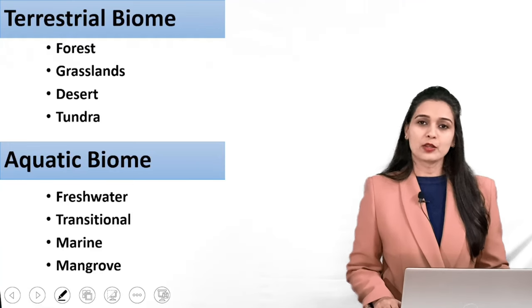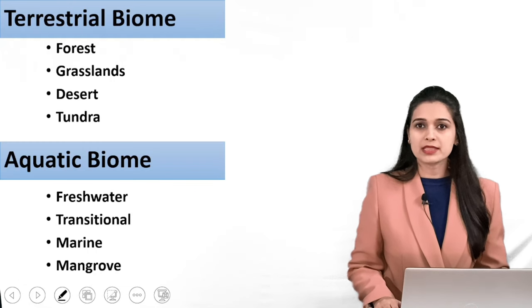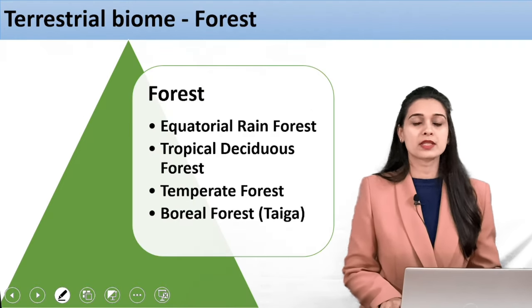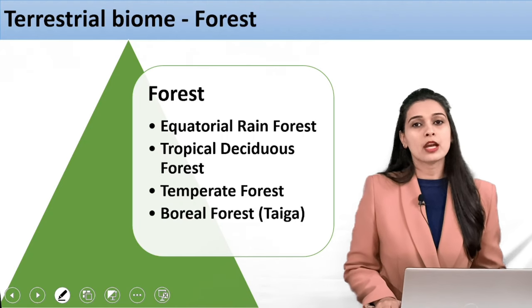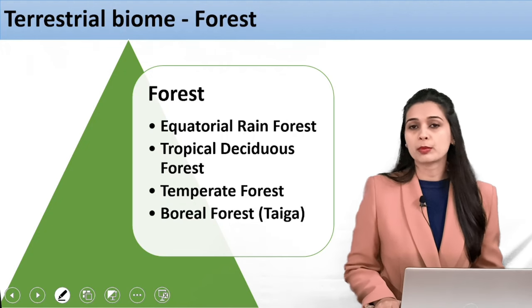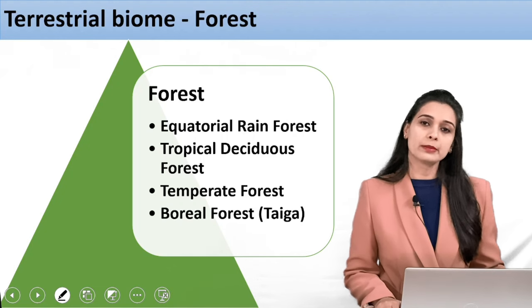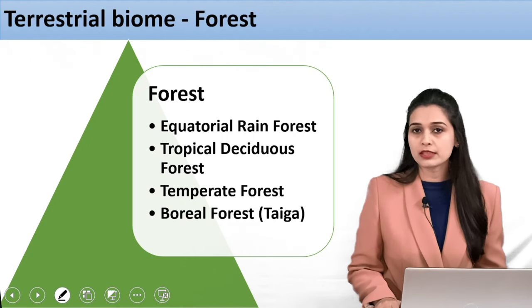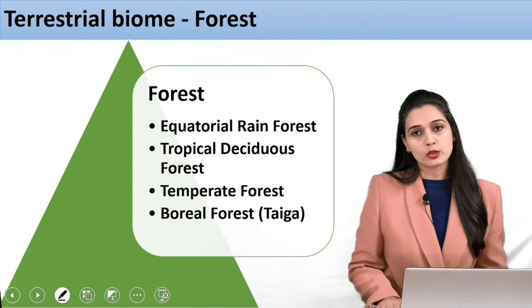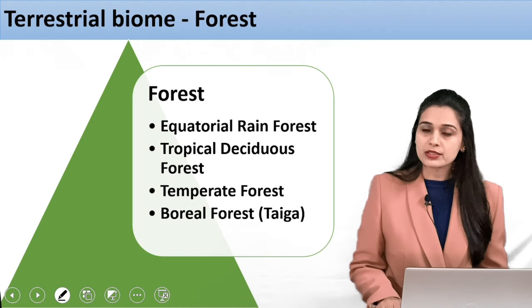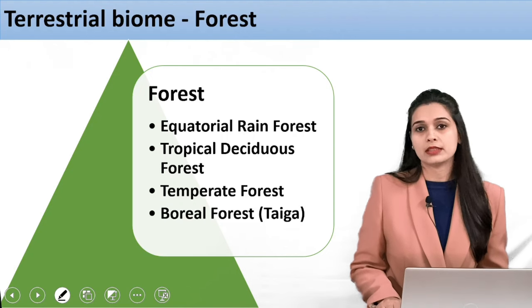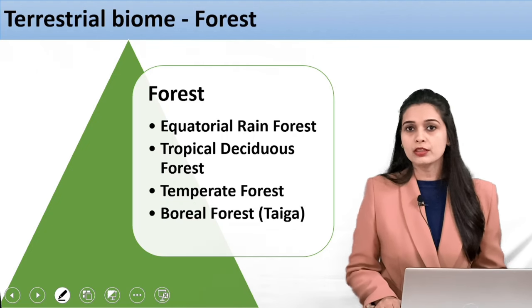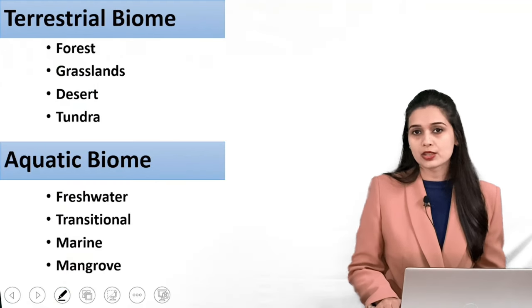Hello everyone, welcome to Deepsik Highest Academy. I hope every one of you is healthy and fine. We will continue the environment series — this is the second lecture. In the last lecture we studied about biomes: major geographical subdivisions of the biosphere differentiated on the basis of characteristic dominant vegetation. We studied terrestrial biomes including equatorial rainforest, tropical deciduous forest, temperate forest, and taiga — the boreal forest. Now we will continue with the next terrestrial biome: the grassland.